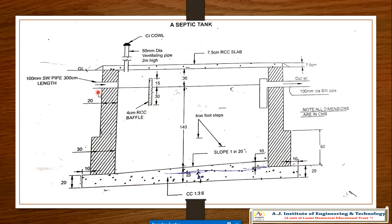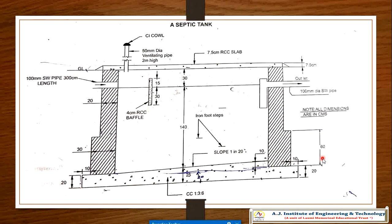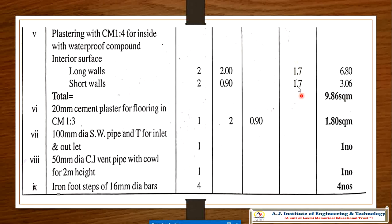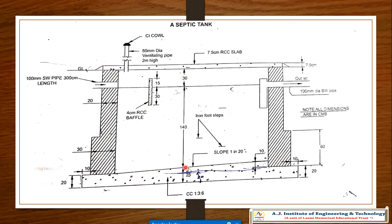Here is the figure I already explained — the total length, total height, and total breadth of the excavation are shown. Now we will go for another item: plastering with cement mortar 1:4 for the inside surface with a waterproof compound. Where are we going to put the plastering? We are going to put it inside, because the outside is excavated and soil is filled up.